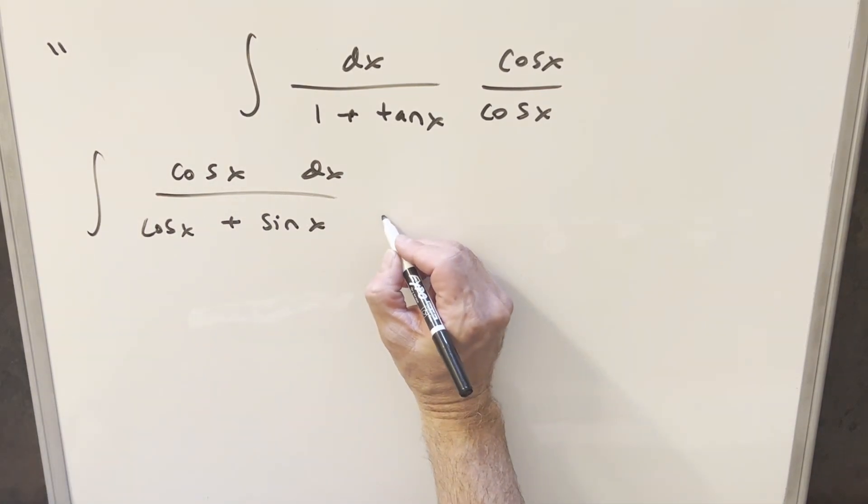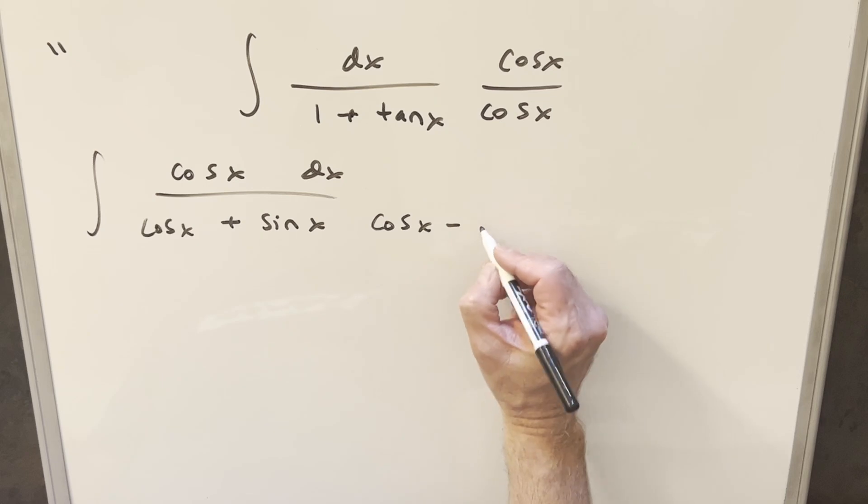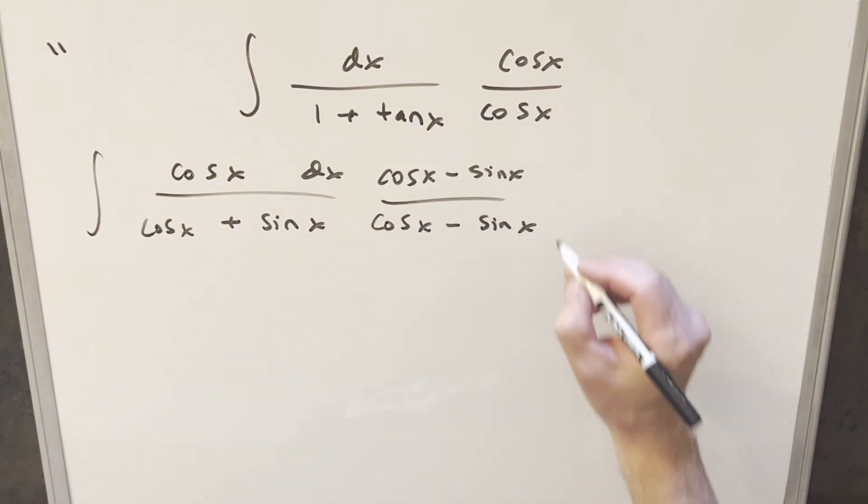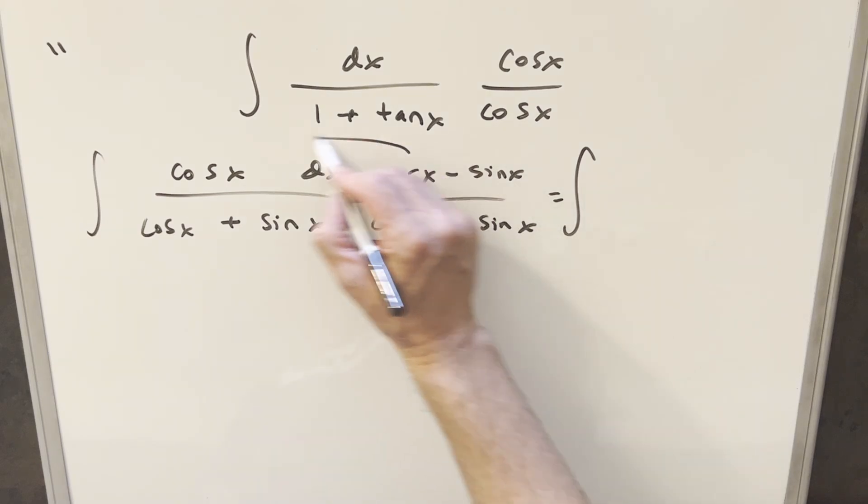And then here what we do is we're just going to multiply by the conjugate, and I'll do the same thing here in the numerator. And then doing this, let's just multiply everything out.